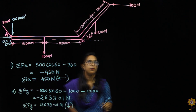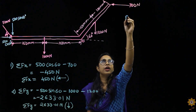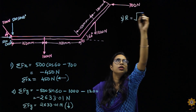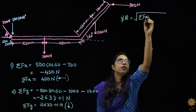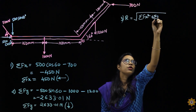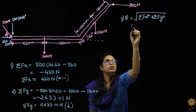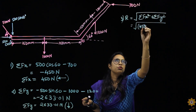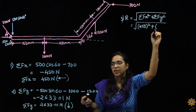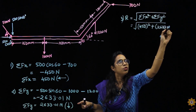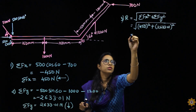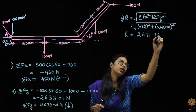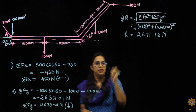Once we have Fx and Fy, the next step is to find the resultant force. R equals the square root of (summation of Fx)² plus (summation of Fy)². Substituting 450 squared plus 2633.01 squared, we calculate the resultant to be 2671.18 newtons.